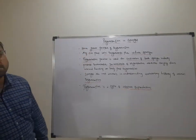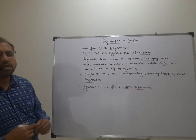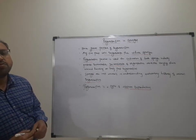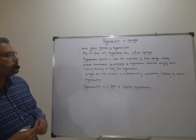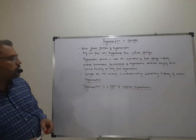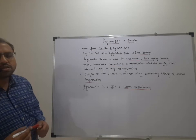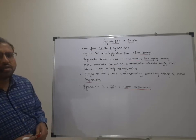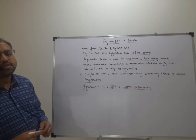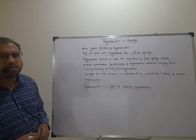Regeneration is also a type of asexual reproduction in sponges, because the cut parts of the body develop into new sponges — that is the formation of new individuals, which is a form of asexual reproduction. This is all about regeneration in sponges. Thank you very much.